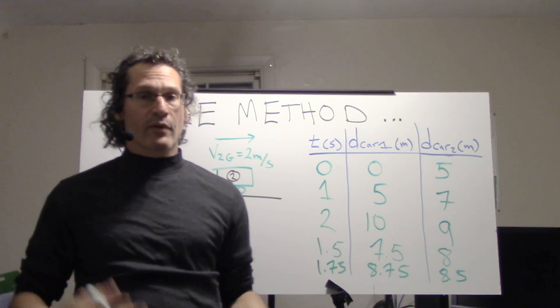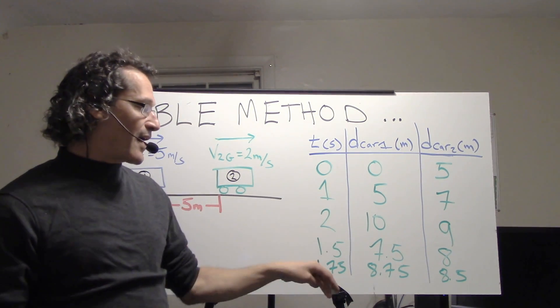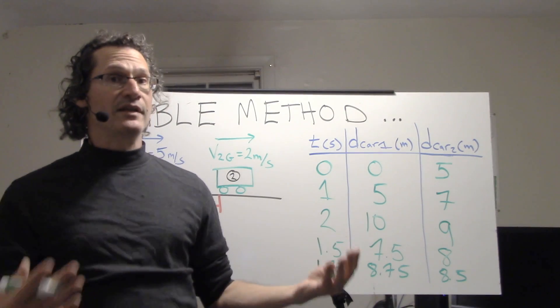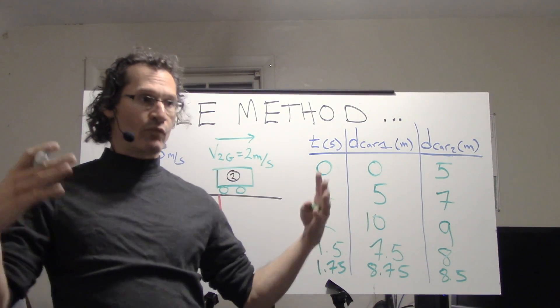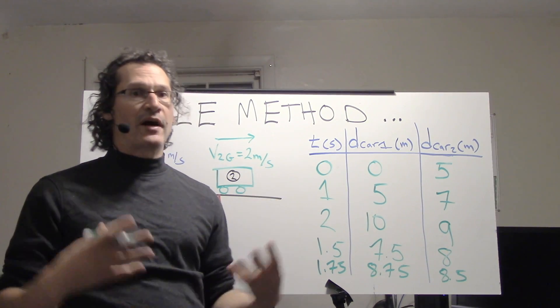And so on and so forth until we get the answer. So that's the table method. I'm just going to leave it here because it's a little tedious, but at least we can zone in on the answer. It's a good way to kind of narrow down the possibilities.